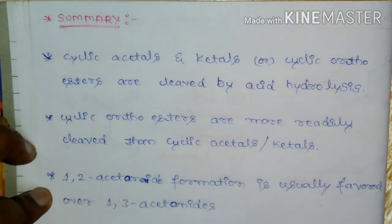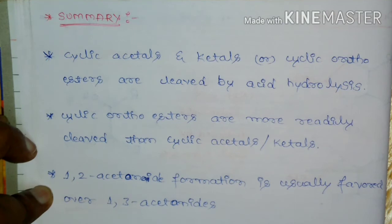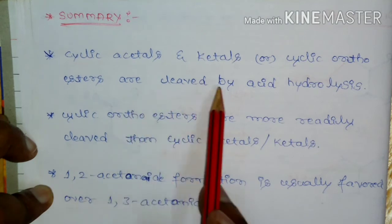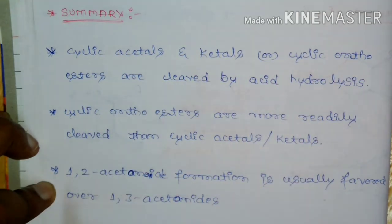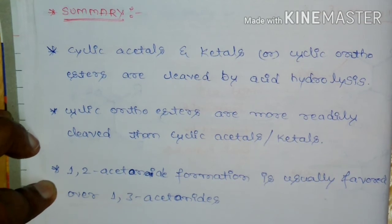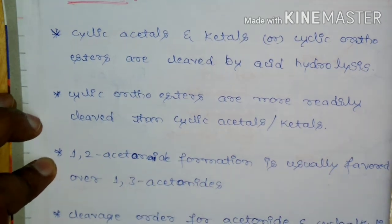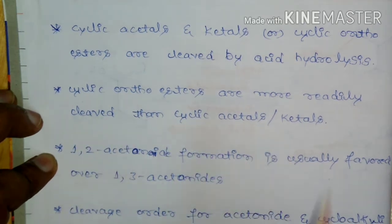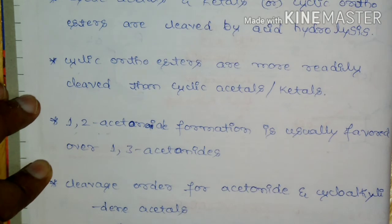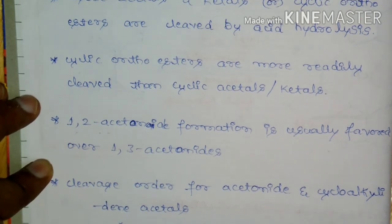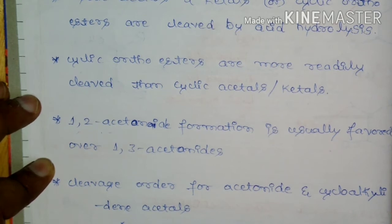To summarize the important points for protecting groups for 1,2-diols and 1,3-diols: cyclic acetals and ketals, and cyclic orthoesters, are both cleaved by acid hydrolysis. So whether protected as a cyclic acetal, ketal, or cyclic orthoester, deprotection is achieved by acid hydrolysis. Only cyclic carbonates are cleaved by basic hydrolysis.